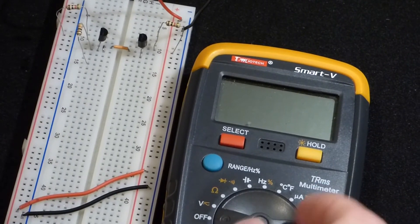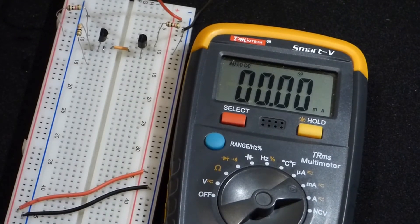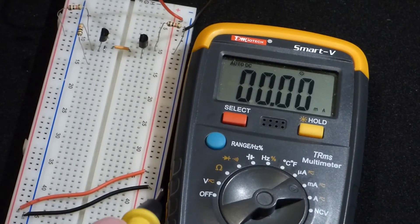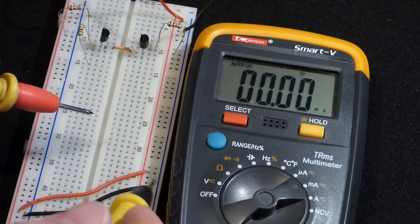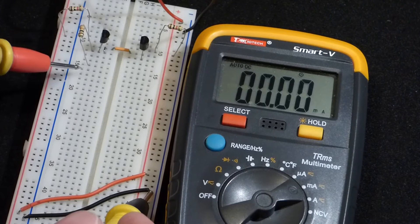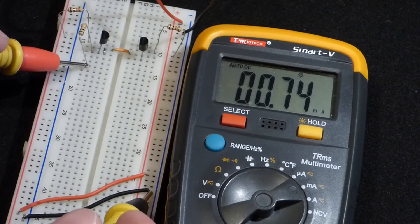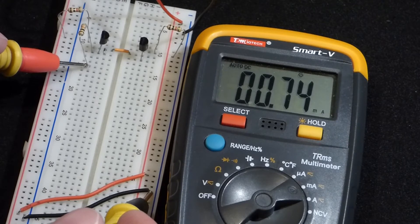So now we're going to measure the current that will come out of that resistor when we connect it to ground. We're just going to put the black probe directly to here, which connects to ground, and then we'll put the red probe to the resistor, and you see it's 0.74 milliamps.